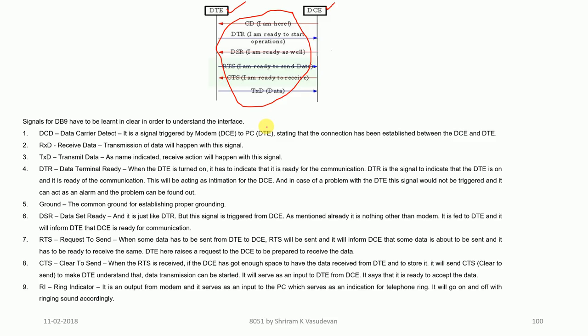Next are RXD and TXD. RXD is receive data — the receive operation happens through RXD. TXD is transmit data — transmission happens through TXD. After the connection is established, these two signals come into picture, but for now let us just set them aside. DTR is data terminal ready: when the DTE — your computer — is turned on, it should indicate it is ready for communication. The DTE tells the modem that it is ready. Ground is self-explanatory.